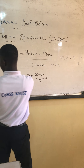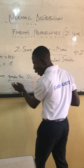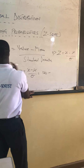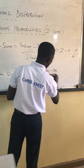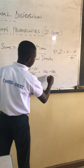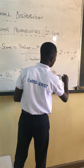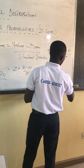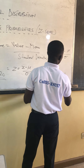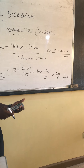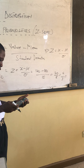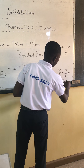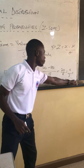The formula is Z equals X minus mean, over standard deviation. Our X here is 120, our mean is 100, and our standard deviation is 15. So we get: 20 over 15, which gives us 1.33. So 1.33 is our Z value.